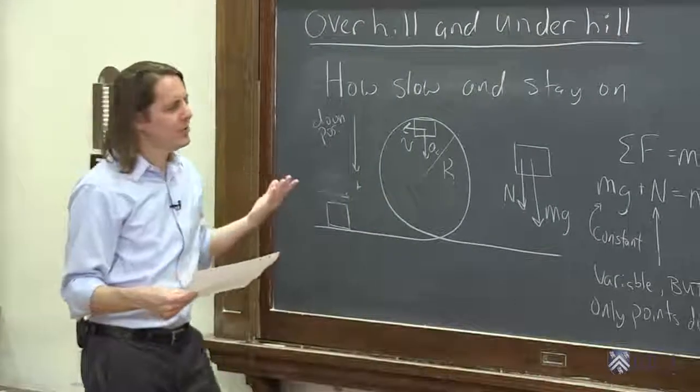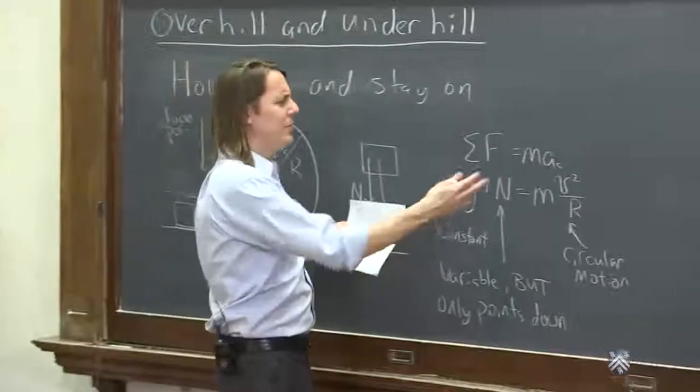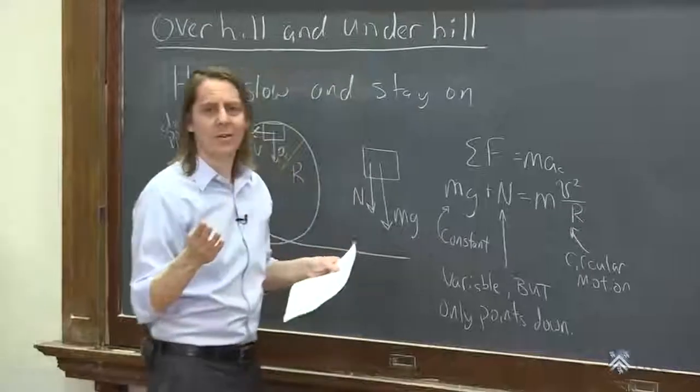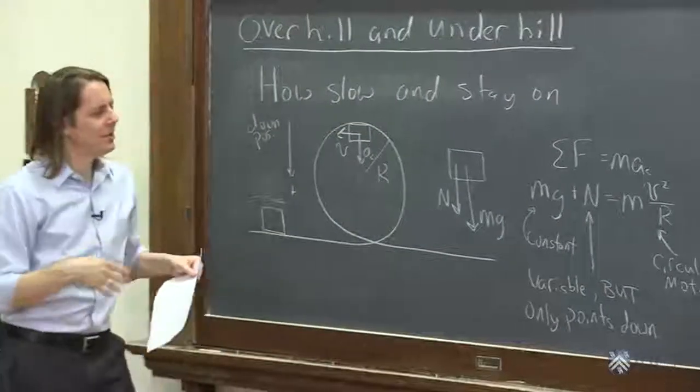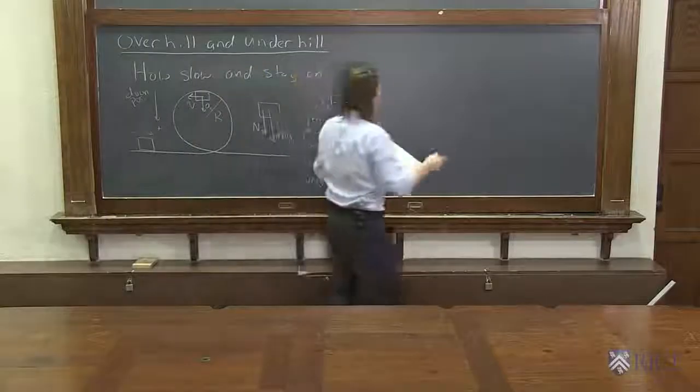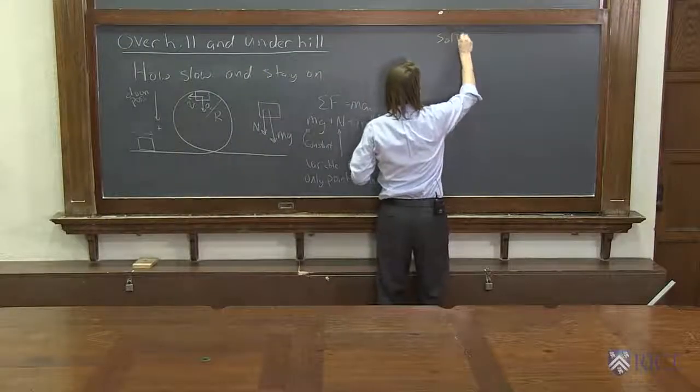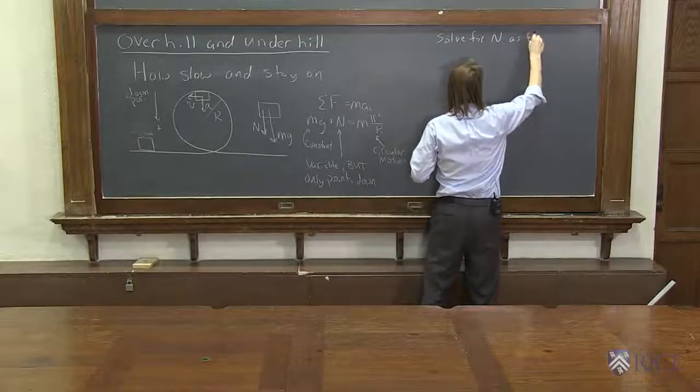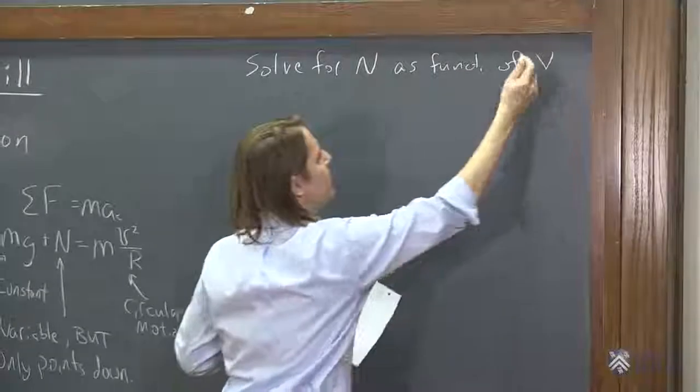So one way to solve these is just kind of intuitively say, well, the limiting speed then must be when this is zero, so I'll solve for v. And that is correct. That's how you do the problem. But let's look at it and see if we can do that a little more mathematically, just if that makes you feel better. Let's solve for the normal force as a function of the speed.